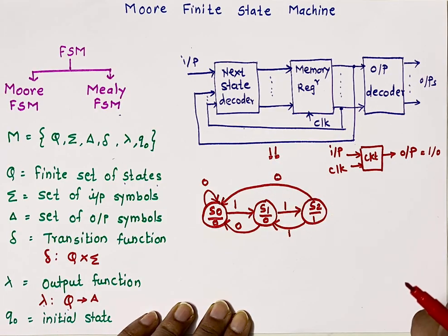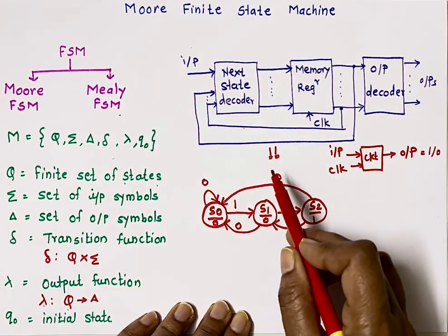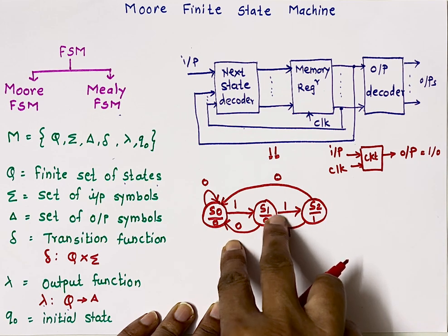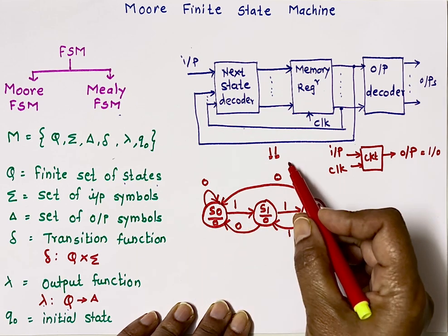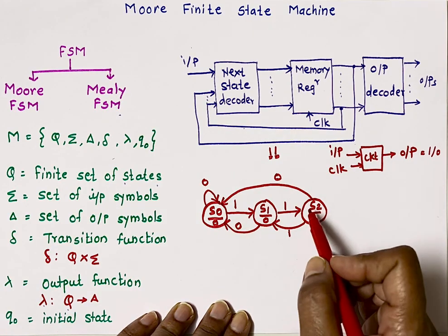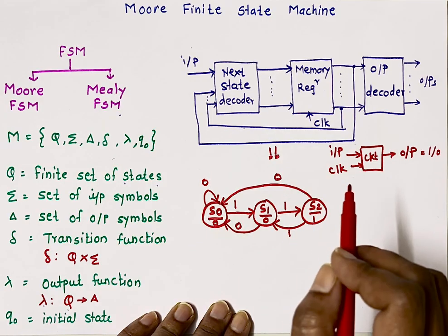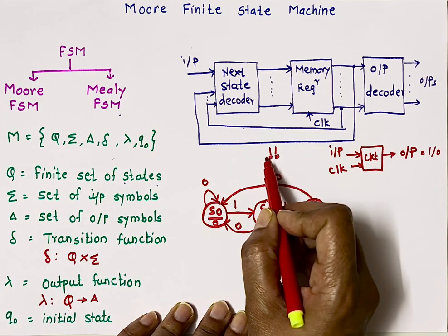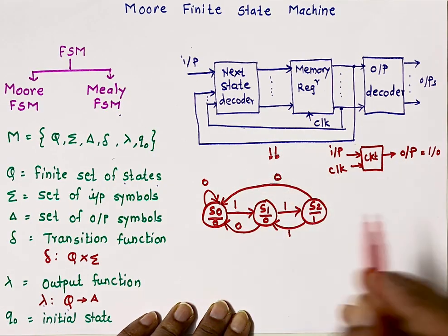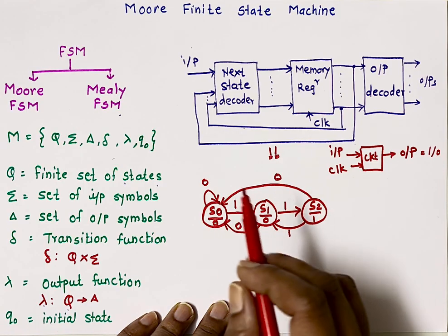I have uploaded another video which explains the Mealy machines, and in that I have taken the same example. In that, you will see there are only two states required to design this circuit using Mealy machines. But here we need three states. In case of Moore machine, the number of states is generally equal to the length of the sequence plus one. Here the length of the sequence is two, so two plus one is three. In this way we draw the state diagram in Moore FSM — we need to write the value of output inside each state.